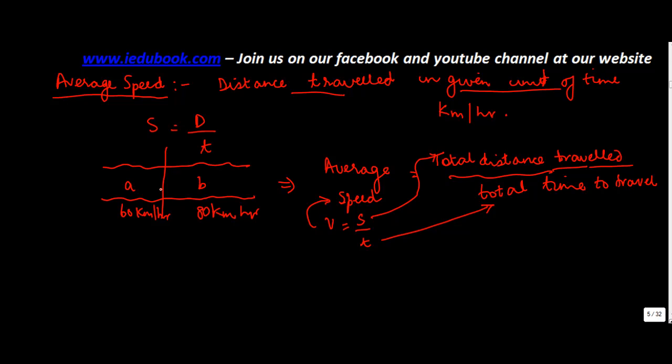So in this example suppose it took one hour here and one hour here. So one hour here at 60 kilometer per hour would mean you have travelled 60 kilometers here. 80 kilometer per hour you would have travelled 80 kilometer in one hour which is the time.